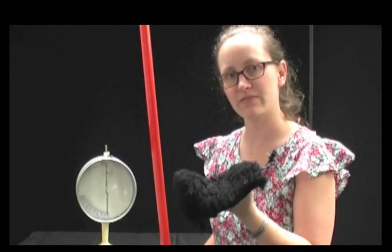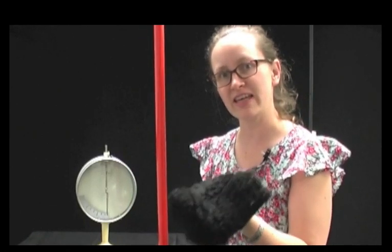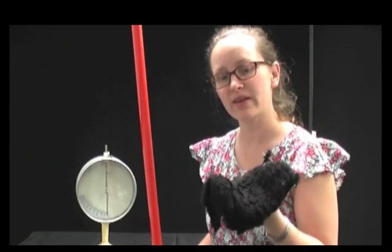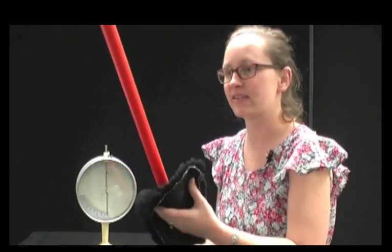Here I've got a plastic rod and a piece of fur. Fur gives up electrons very easily. So when I rub the plastic rod against the fur, electrons will be transferred from the fur to the plastic rod, which should make the plastic rod become negative. So let's give that a go.